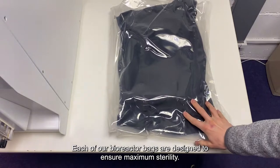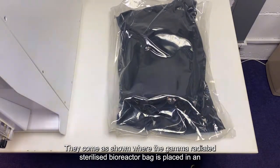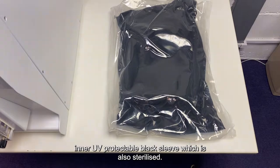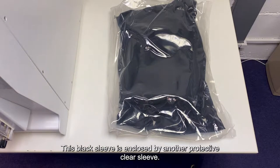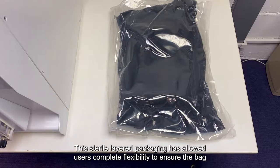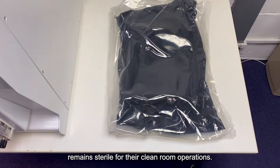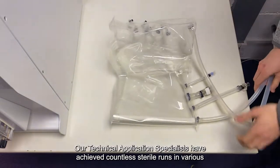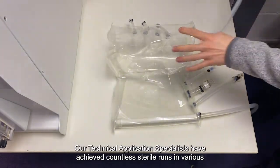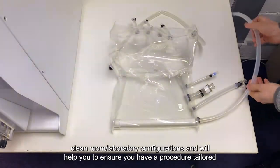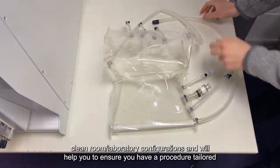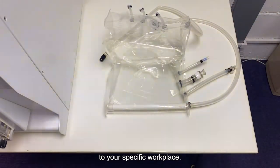Each of our bioreactor bags are designed to ensure maximum sterility. They come as shown, where the gamma radiated sterilised bioreactor bag is placed in an inner UV protectable black sleeve, which is also sterilised. This black sleeve is enclosed by another protective clear sleeve, and this sterile layered packaging has allowed users complete flexibility to ensure the bag remains sterile for their clean room operations. Our technical application specialists have achieved countless sterile runs in various clean room or laboratory configurations, and will help you to ensure that you have the procedure tailored for your specific workplace.